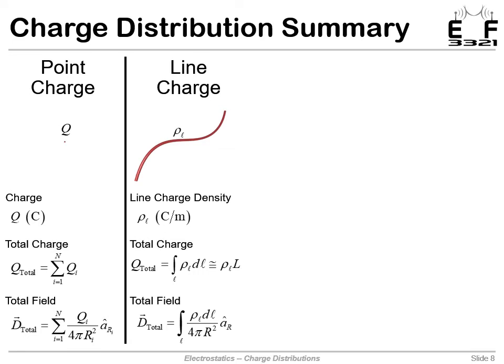We have line charges described by the line charge density, units of coulombs per meter. And so total charge in general is an integral, and we use the integral when the line charge density is not uniform. But when it is, it reduces to just the line charge density times length. And we can also calculate the total field from that by also integrating over the length of that line.